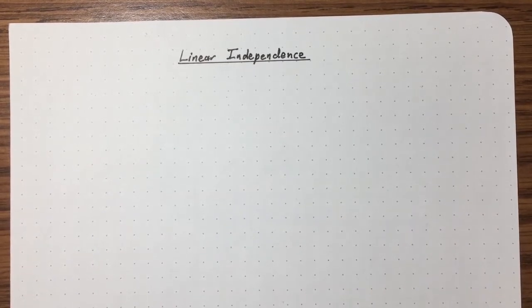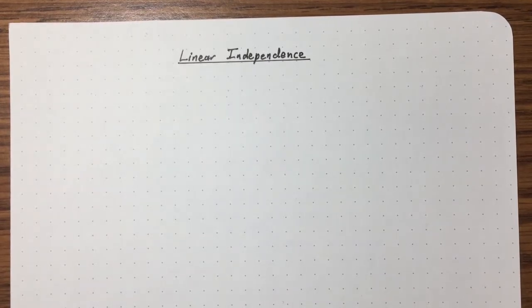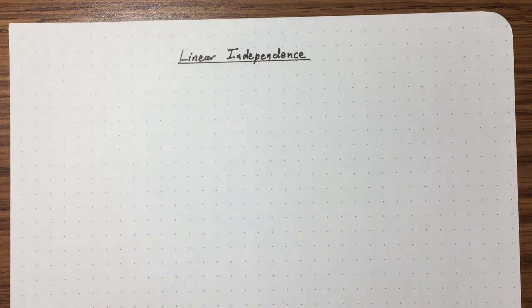Today we'd like to talk about linear independence, and in particular, what does it mean for a set of vectors to be linearly independent. This is actually a related concept to span, which we talked about in the previous lecture, but it's a little different. To be honest, this is a tricky concept the first time you learn it. In particular, the definition of linear independence seems a little strange at first, so I'd like to try to motivate that.